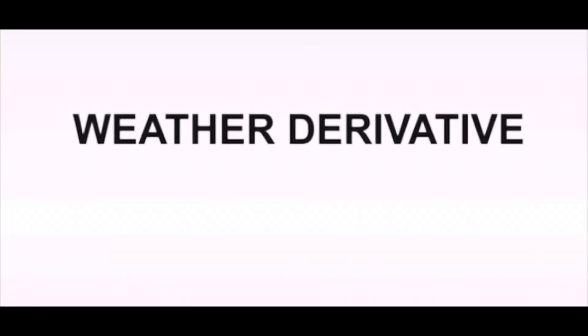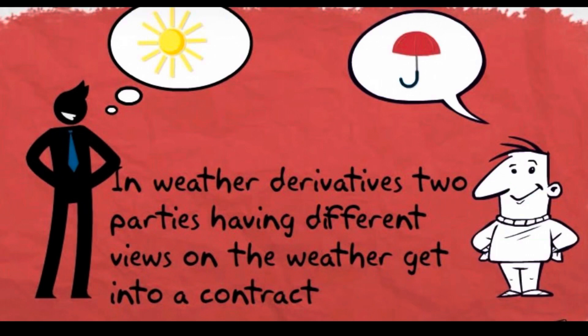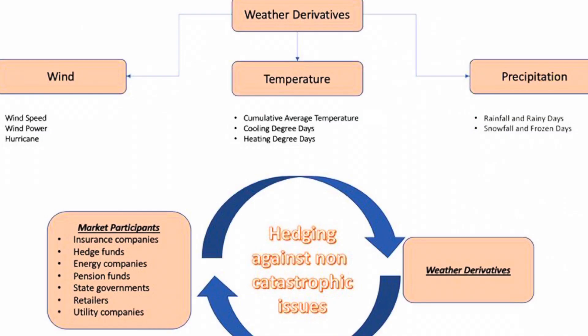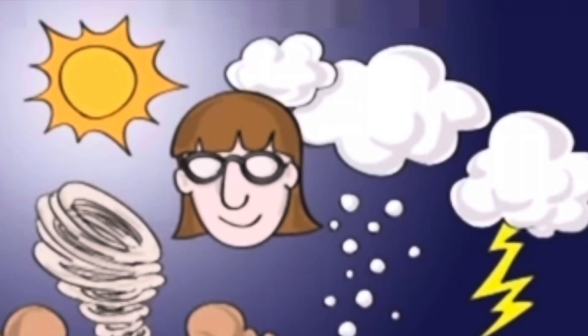A weather derivative is a futures contract or options on the futures contract where the underlying commodity is a weather index. They work very much the same way that interest rate or stock index futures and options do, by creating a tradable commodity out of something that is relatively intangible.